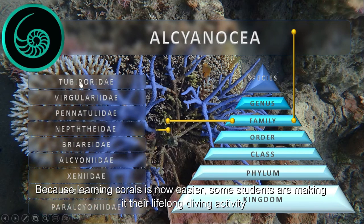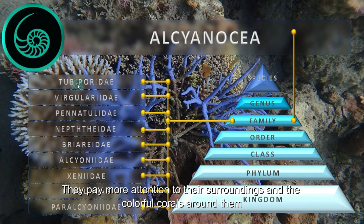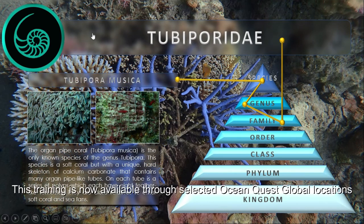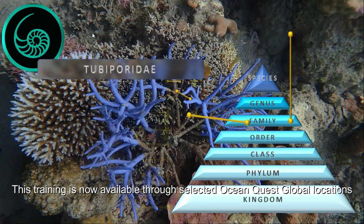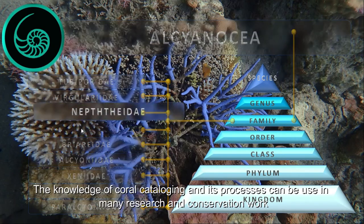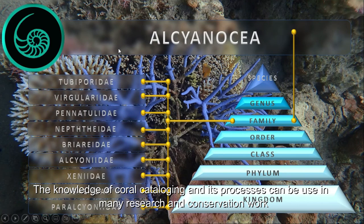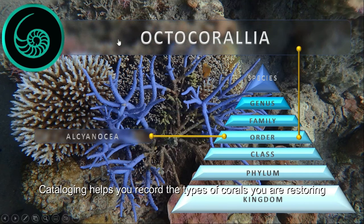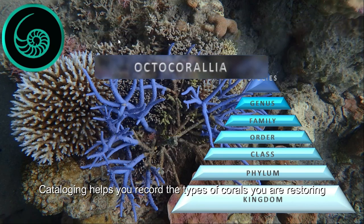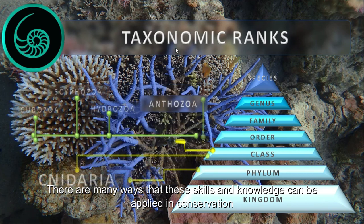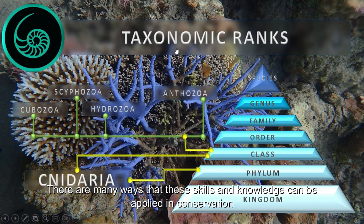Because learning corals is now easier, some students are making it their lifelong diving activity. They pay more attention to their surroundings and the colorful corals around them. This training is now available through selected OceanQuest Global locations. The knowledge of coral cataloging and its processes can be used in many research and conservation works. Cataloging helps you record the types of corals you are restoring, and also helps in identifying vulnerable and threatened species. There are many ways these skills and knowledge can be applied to conservation.